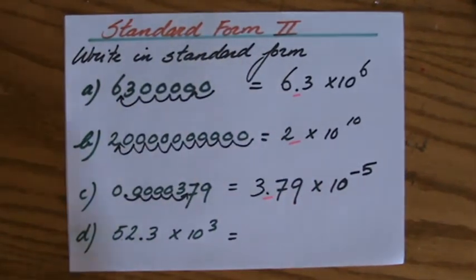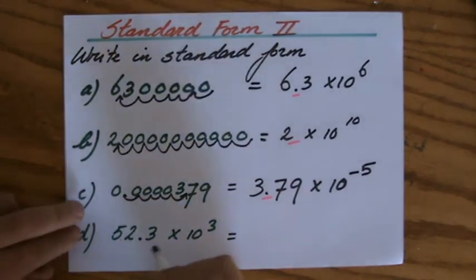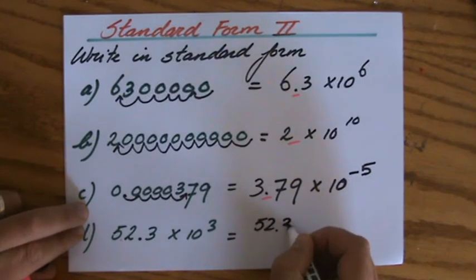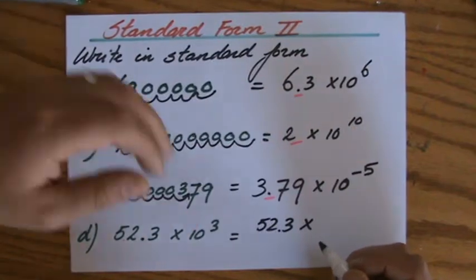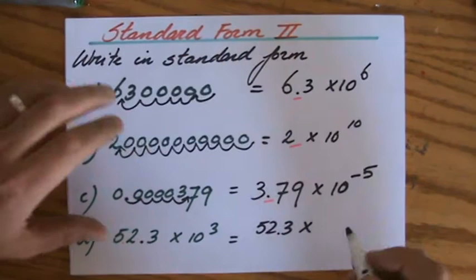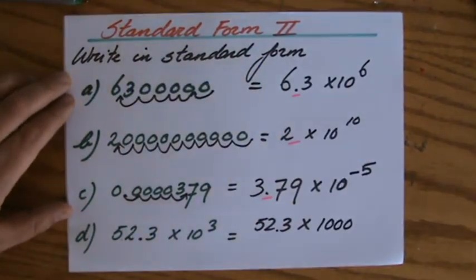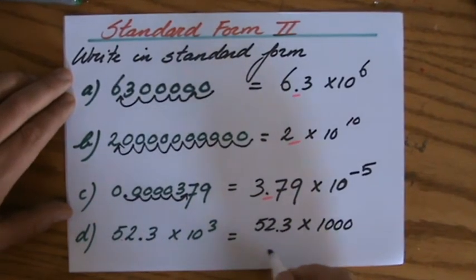There are various ways of doing this. I'll just show you what I prefer, and I'm not saying that's the best way. But 52.3 times ten to the power three - how much is ten to the power three? Which is ten times ten times ten. Ten times ten is a hundred, times ten is a thousand. So let me just write it out: 52.3 times a thousand.